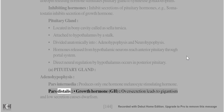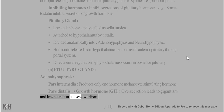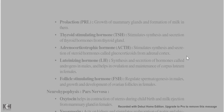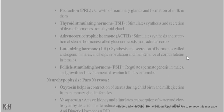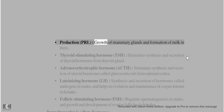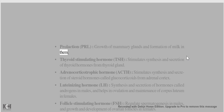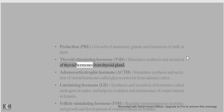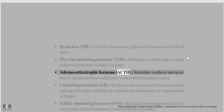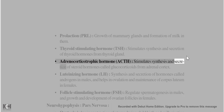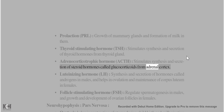Adenohypophysis: Pars intermedia produces only one hormone – melanocyte stimulating hormone (MSH). Pars distalis produces: Growth hormone (GH) – over-secretion leads to gigantism and low secretion causes dwarfism. Prolactin (PRL) – promotes growth of mammary glands and milk formation. Thyroid stimulating hormone (TSH) – stimulates synthesis and secretion of thyroid hormones. Adrenocorticotrophic hormone (ACTH) – stimulates synthesis of glucocorticoids from adrenal cortex.